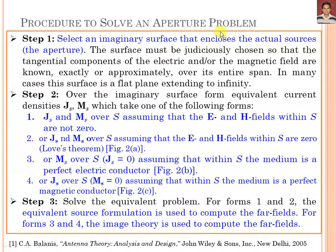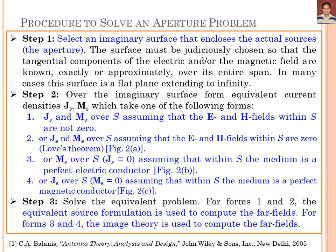This procedure can be summarized in a three-step approach. In Step 1, select an imaginary surface S enclosing the actual sources. The surface must be judiciously chosen so that the tangential component of the electric or magnetic fields is known exactly or approximately over its entire span — in many cases this surface is a flat plane extending to infinity. In Step 2, over the imaginary surface form equivalent current densities Js and Ms: either both (assuming fields inside S are not zero — Love's theorem), or only Ms (assuming the medium inside is a perfect electric conductor), or only Js (assuming the medium inside is a perfect magnetic conductor).